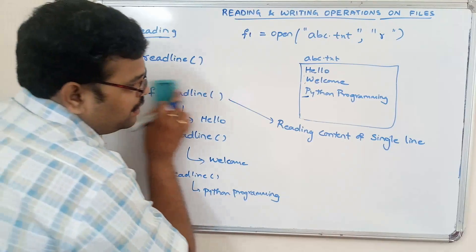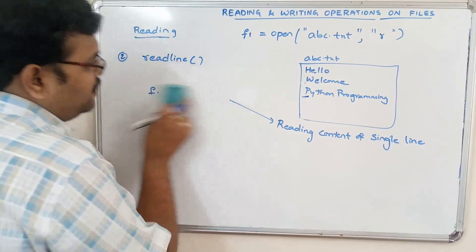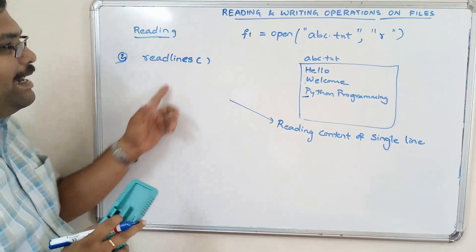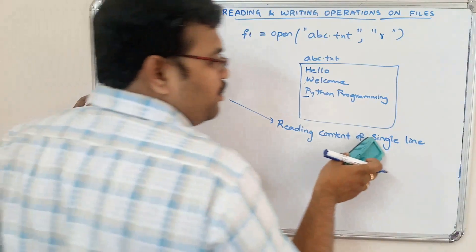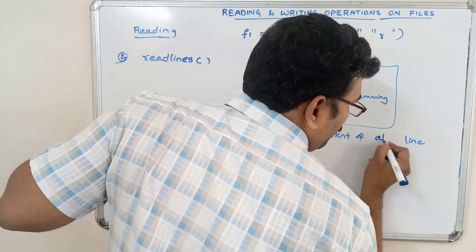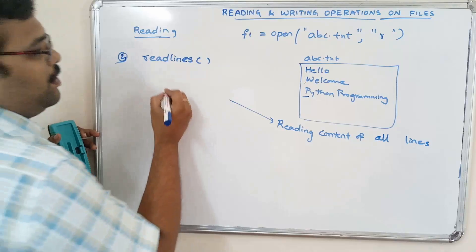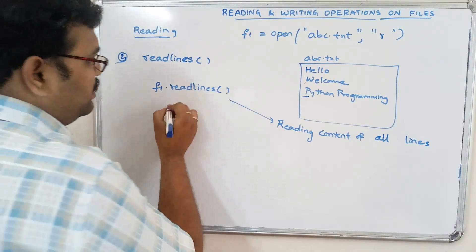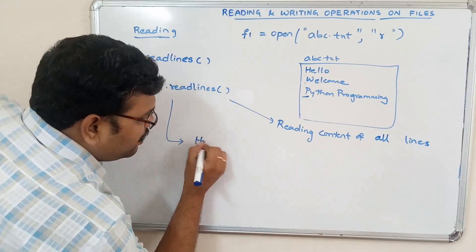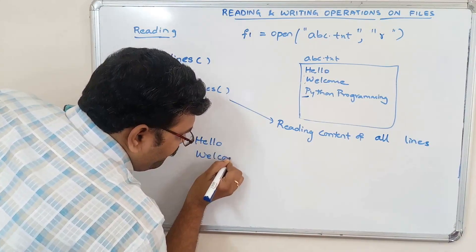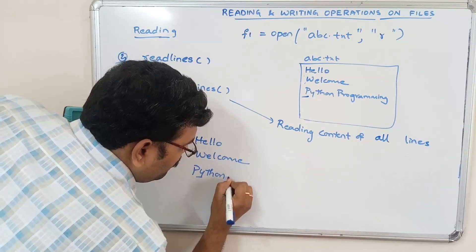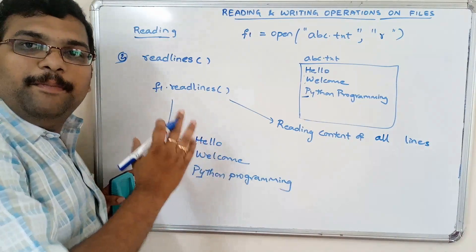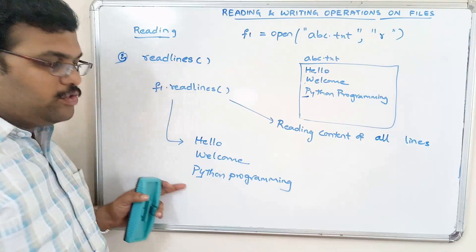The third method is readlines() — note the plural. Readlines() reads the content of all lines. Calling f1.readlines() returns everything: 'hello', 'welcome', 'python programming'. All lines will be printed.